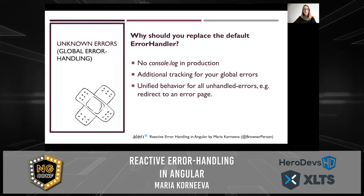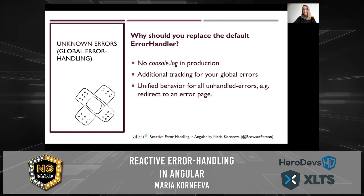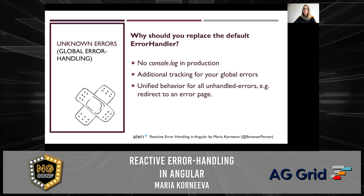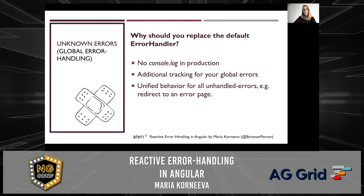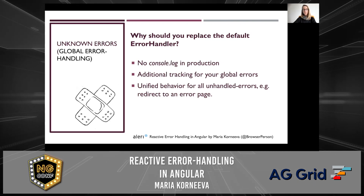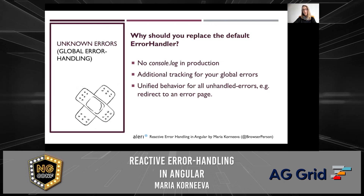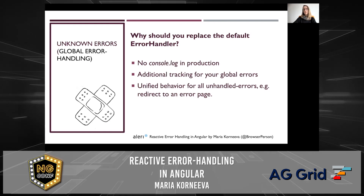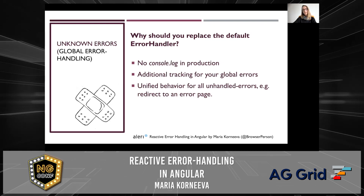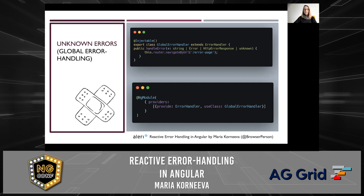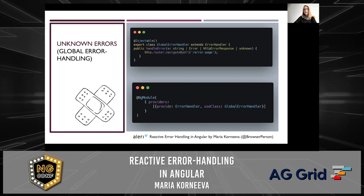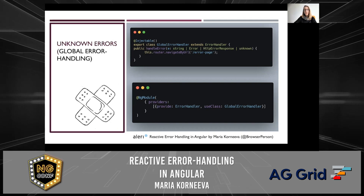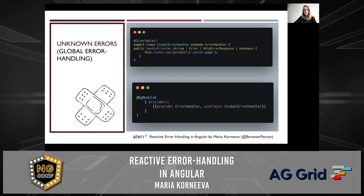Last but not least, unknown errors. Angular provides a default error handler which just logs your errors on the console. However, it's not the best way to handle errors in production, because again you might give away too much implementation detail that can be used by hackers. Additionally, you might still want to log and track your errors in your error handler. And finally, you might implement a unified behavior for all unexpected errors, such as a redirect to an error page. Your custom implementation of the error handler could look like this: you just extend the error handler, override the handleError method — in my case I just redirect to the error page, but you can add any other functionality. Don't forget to provide it in your NgModule and you're done.